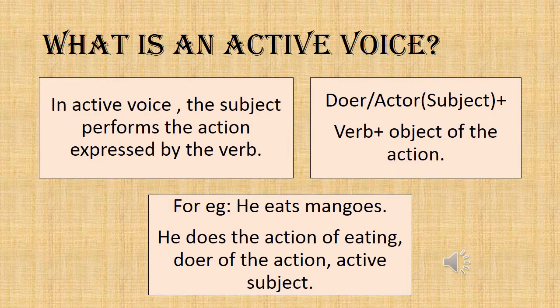What is an active voice? In active voice, the subject performs the action expressed by the verb. The doer, the actor, i.e. the subject, plus verb, plus object of the action is an active voice. For example, 'he eats mangoes.' Here, he does the action of eating. The doer of the action is he, so it is active voice. This is an example of active voice.